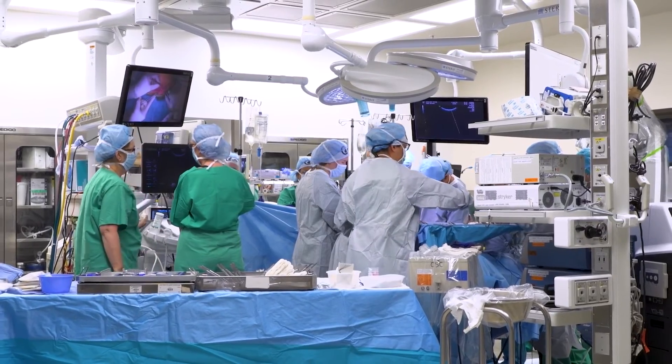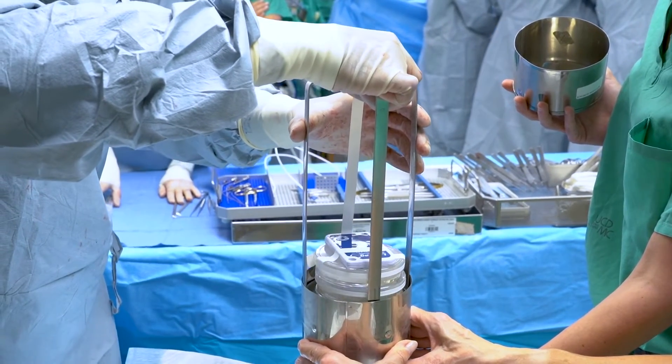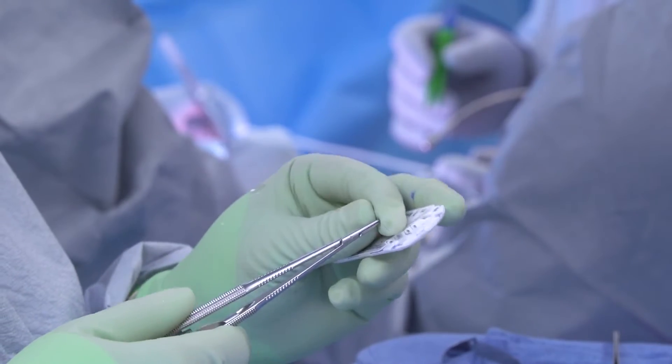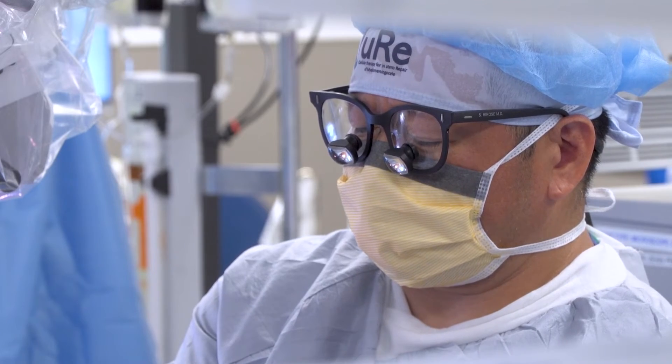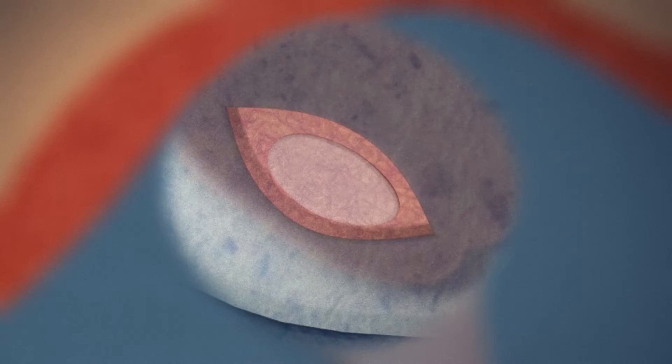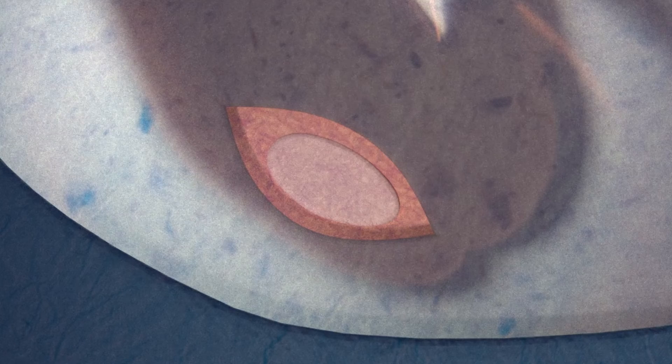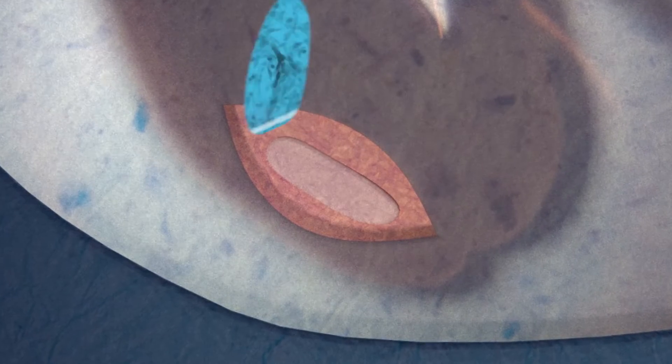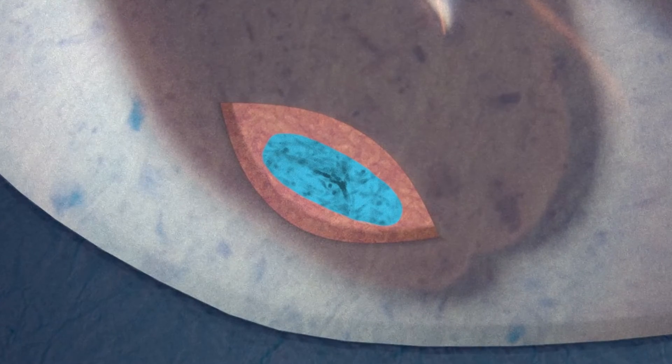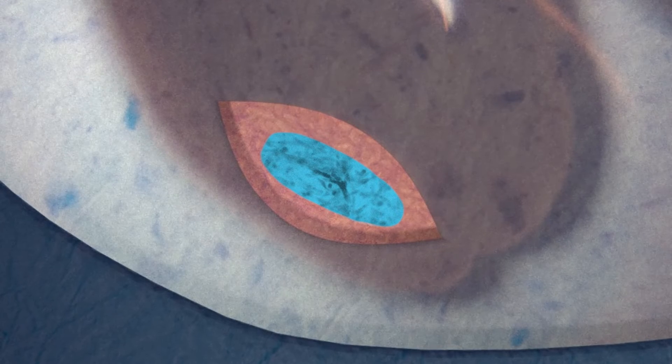While we're doing the fetal operation, we trim this piece of tissue to the right shape and size, place it right on the exposed spinal cord of the fetus during the operation, and incorporate that layer of tissue and cells into our closure of that MMC.